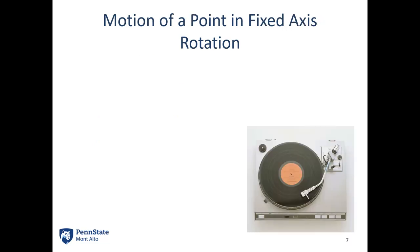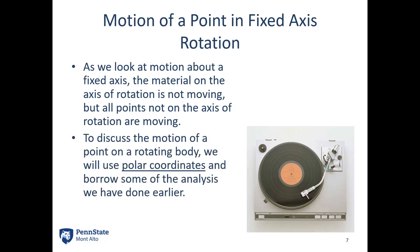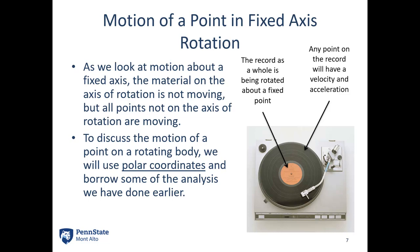Next up, let's talk about motion of a point on a fixed axis. If we look at motion about a fixed axis, the material on the axis of rotation itself is not moving, but all the points not on the axis of rotation are moving. To discuss the motion of a point on a rotating body, we're going to look at polar coordinate systems and borrow some of the analysis we've done earlier. Here we've got a record player — that record is turning. The center of the record is not really moving; the axis is not moving. But if we look at any point on the record, it's going to have its own velocity and its own acceleration because of this rotation.